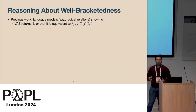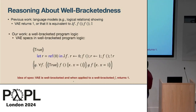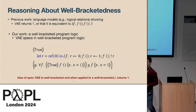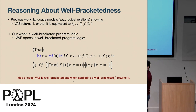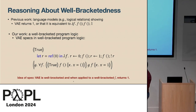Now, the question is how do we reason about well-bracketedness? Previous work has built language models for the entire language to show that because the language is well-bracketed, the program returns 1, or that the program is equivalent to a trivial program that takes f, calls it twice, and returns 1. In this work, we are giving you a program logic — a Hoare logic — that allows you to specify and prove that the program returns 1. I'm using parentheses instead of curly braces for Hoare triples to say that this is a well-bracketed Hoare triple.